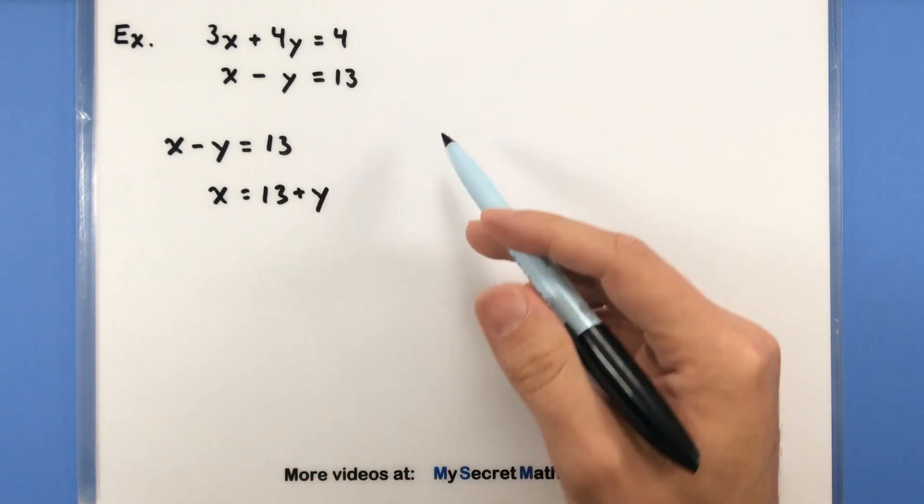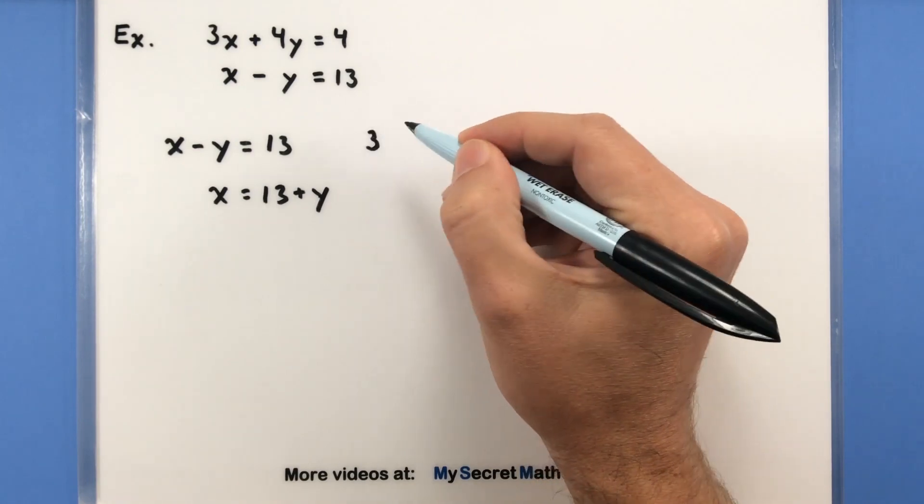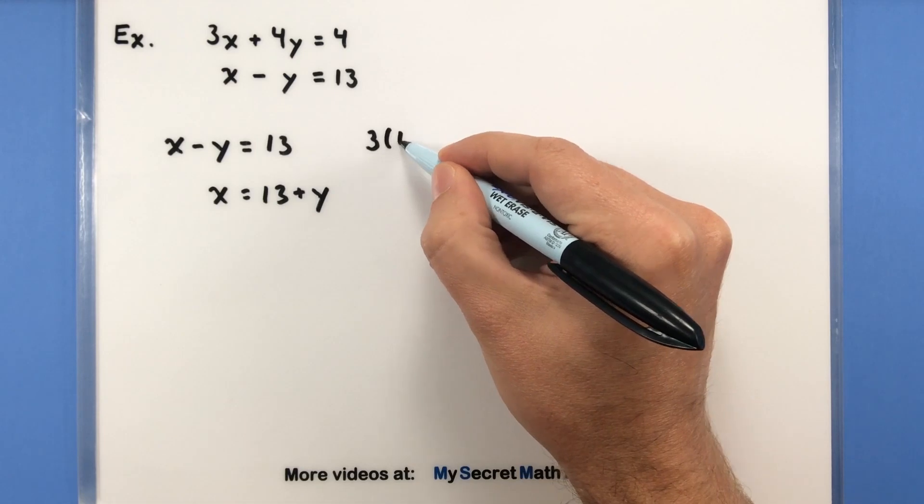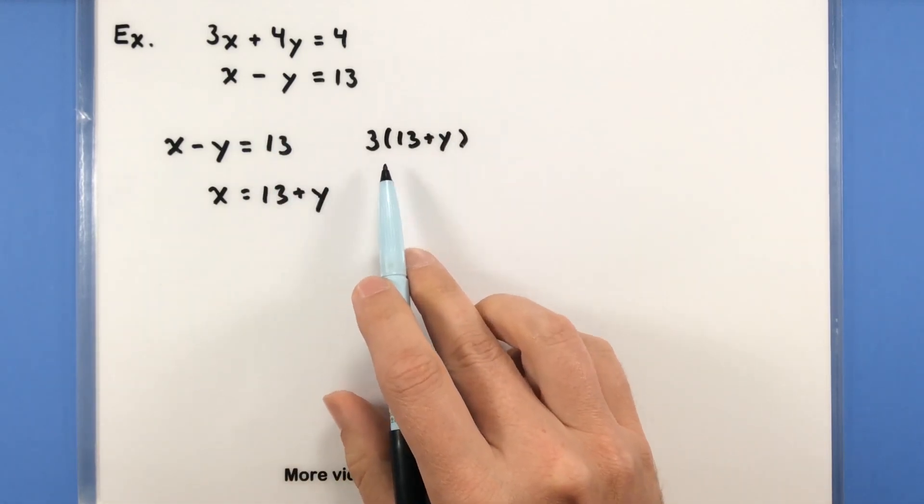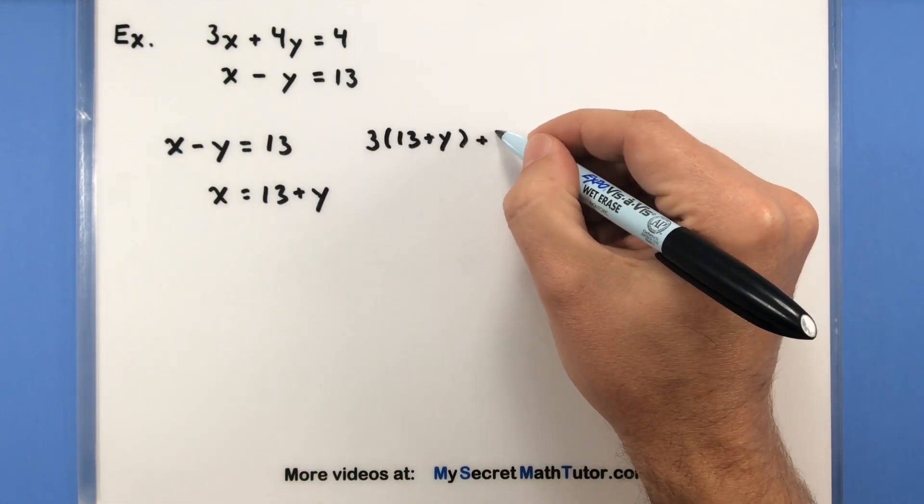Now I'm going to take this, and we're going to substitute it into the first equation. And we do that by essentially writing the first equation, but wherever I see that x, I'm going to replace it with this expression that we just found. So 3x is now going to turn into 3 times (13 + y). Yep, that's what x is equal to, and let's write out the rest.